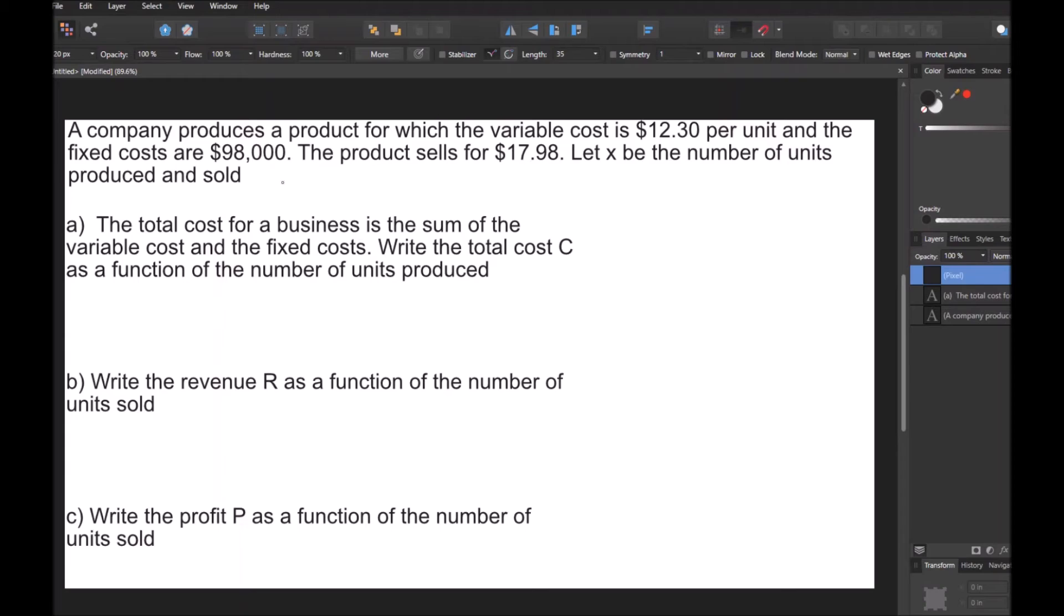Okay, so in this next question we're told that a company produces a product for which the variable cost is $12.30 per unit and the fixed costs are $98,000. The product sells for $17.98. Let X be the number of units produced and sold. And in the first part of the question we're told that the total cost for a business is the sum of the variable cost and the fixed cost. And we're asked to write the total cost, C, as a function of the number of units produced.